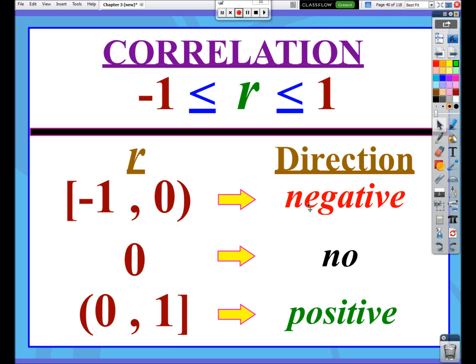The bounds of correlation, the most correlation could ever be, is either positive 1 or negative 1. It can be 1 or negative 1. The only time that it'll be 1 is if your data makes a perfect line. There's no variation.